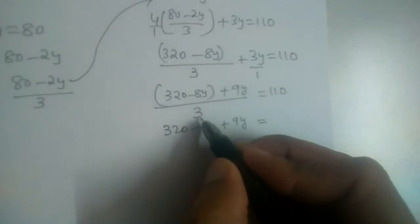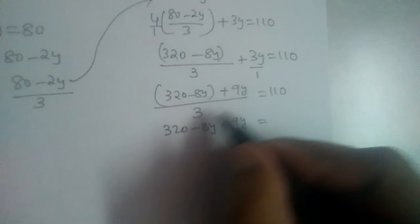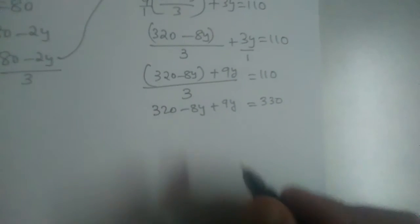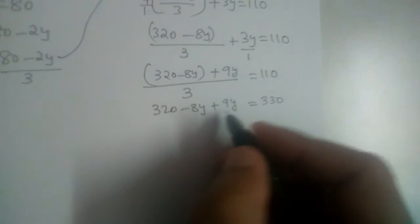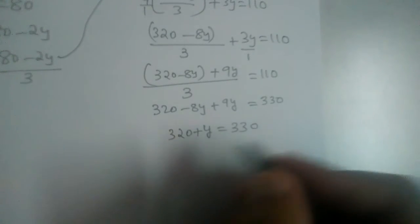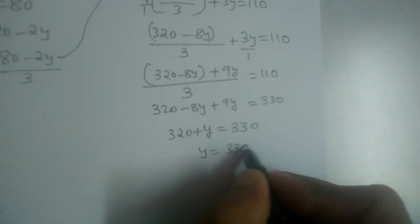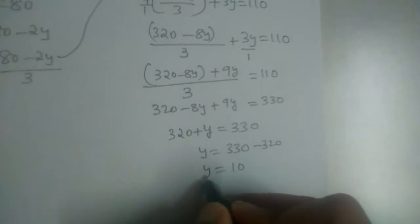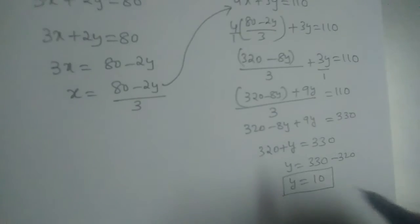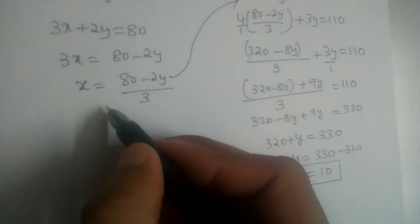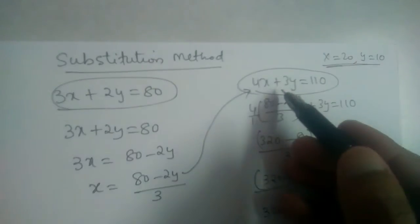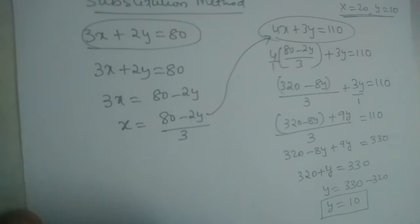So 320 − 8y + 9y = 330. Combining like terms: −8y + 9y = y, so 320 + y = 330. Moving 320 to the other side: y = 330 − 320 = 10. The value of y is 10. Now we substitute y = 10 back into one of the equations — the first, second, or the expression we derived for x.